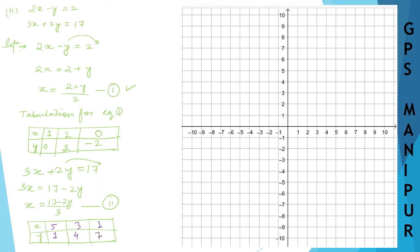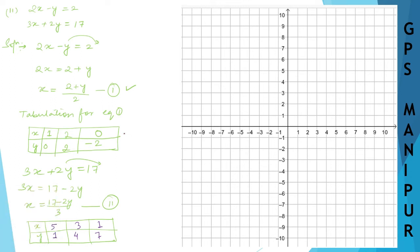Now let me draw the graph. For equation 1, the first point is x is 1 and y is 0. The second point is x is 2 and y is 2. The third point is x is 0 and y is minus 2. I will join these points to form the line.